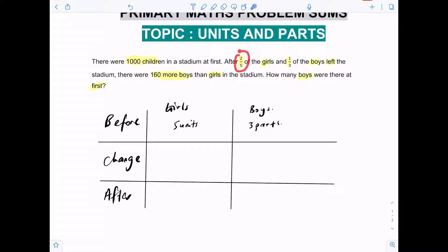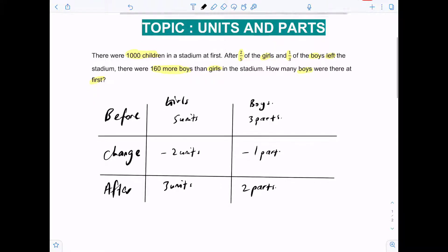Two out of five of the girls left, so take away two units. We're left with three units of girls. One out of three of the boys left, so take away one part. We're left with two parts.